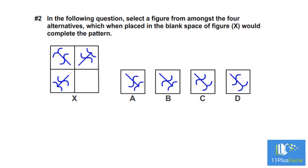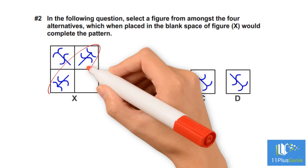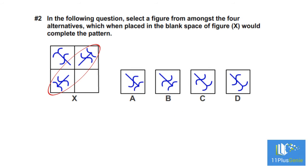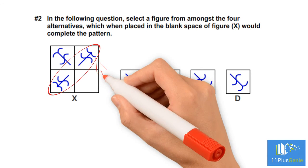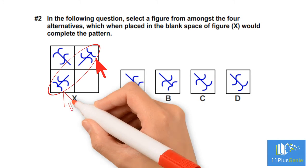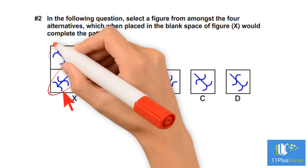The first thing we can use is the two given shapes opposite each other. We can see that both the outermost parts of the shapes are bent towards the middle of the squares. The same pattern must be followed for the other two shapes. We can eliminate A and B.